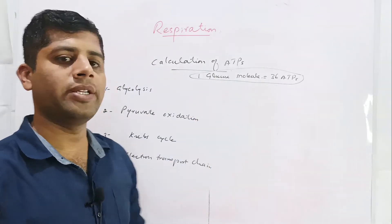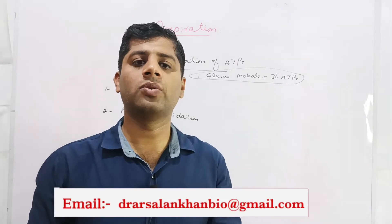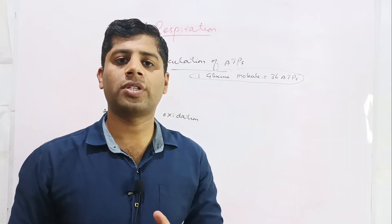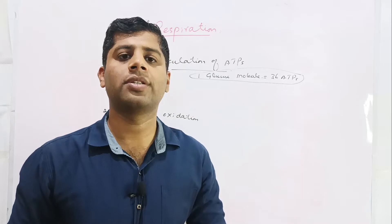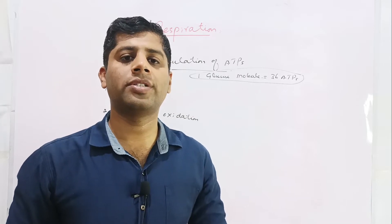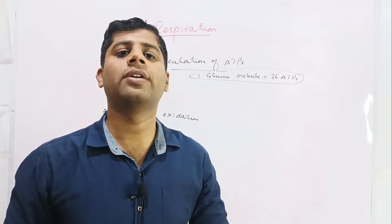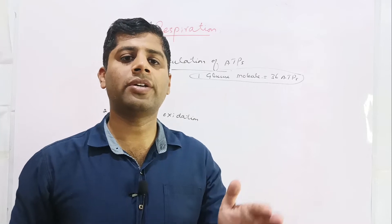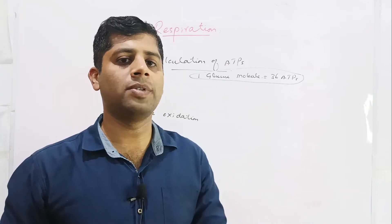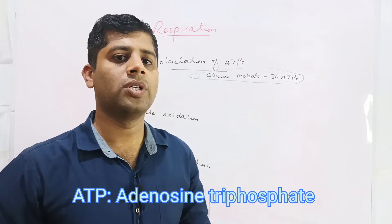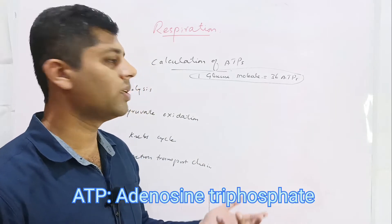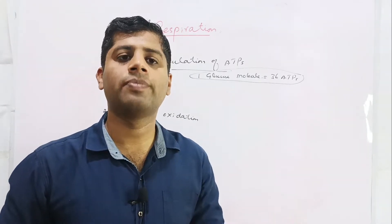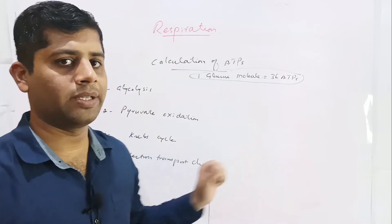As we know that in aerobic respiration, one glucose molecule is completely oxidized going through four steps: the first one is glycolysis, the second pyruvate oxidation, third Krebs cycle, and fourth is the electron transport chain. At the end of these mechanisms, 36 ATPs are produced. We are going to calculate in which step how many ATPs are produced, and we will subtract the ATPs used to find the net.